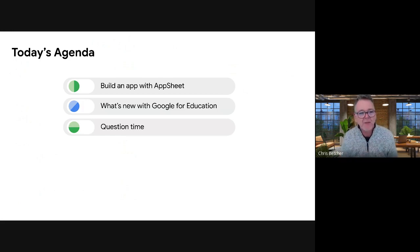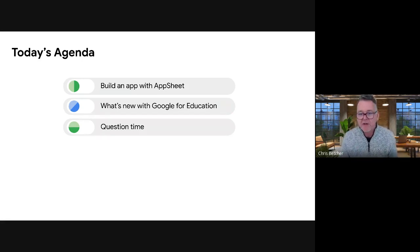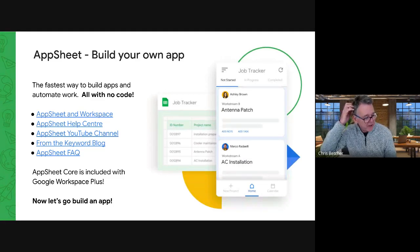Today we have a smaller list of things, but each will unpack a little bit. We're looking at building an app with a great Google tool called AppSheet. Maybe you've used it, maybe you haven't — I find a lot of people don't even know it exists. If your school is using Education Plus, you get AppSheet Core included — it's part of Education Plus. There's a slightly fancier version, but it's fancy enough for anything you'd want to do in school.